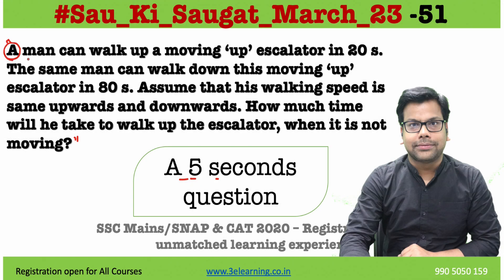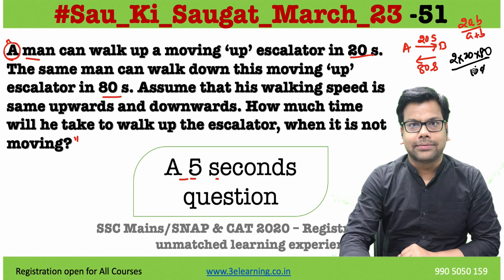A person takes 20 seconds or 20 steps, or 80 seconds or 80 steps, to go from point A to point B — be it escalator or anything. So we are working on A to B and B to A, meaning average speed, and the formula for average speed is 2AB upon A plus B. So here we have 2 into 20 into 80, divided by 20 plus 80, which is 100. Cancel out — the answer is 32 seconds or 32 steps.